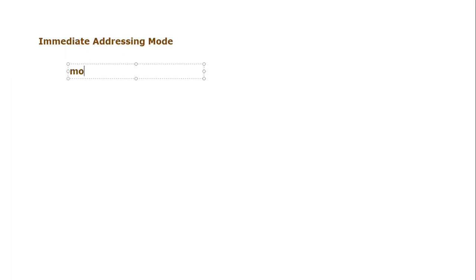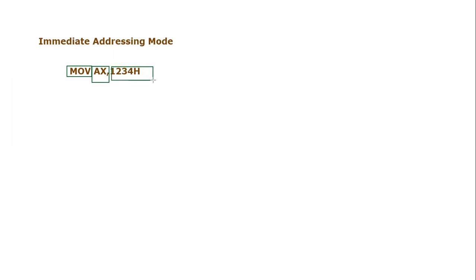Let's say we are writing the instruction: MOV AX, 1234h. If we consider this instruction part by part, the MOV keyword is only the opcode. AX we know is a register. And what is 1234h? It is neither a memory location nor a register — it is basically data or an operand given inside the instruction itself. That is called an immediate addressing mode value.